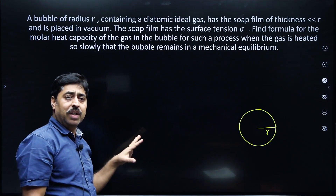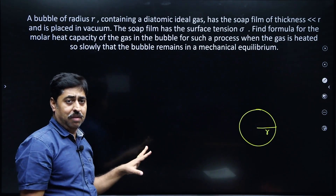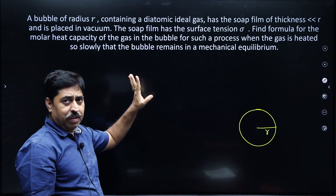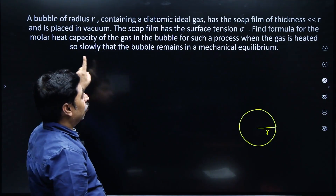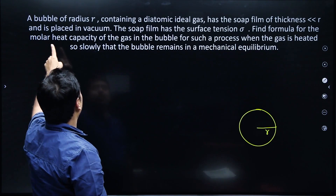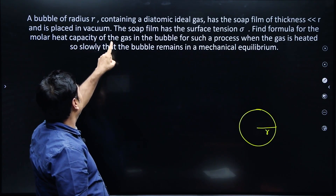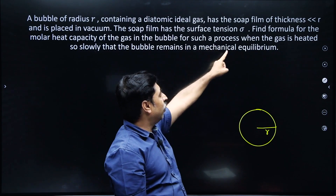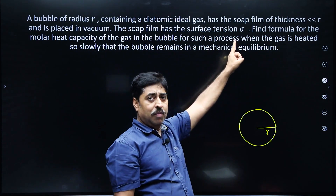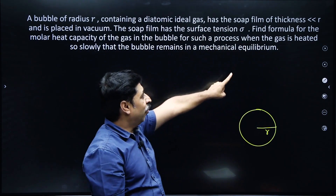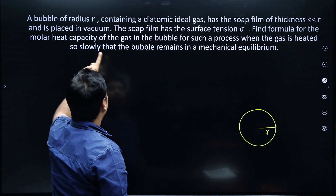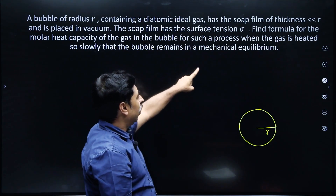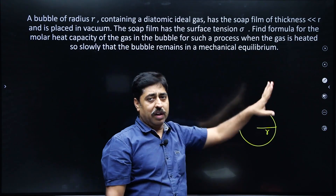The soap bubble contains a diatomic gas. The surface tension of the liquid is sigma. The question asks: find the formula for molar heat capacity of the gas in the bubble for such a process when the gas is heated slowly so that the bubble remains in mechanical equilibrium.